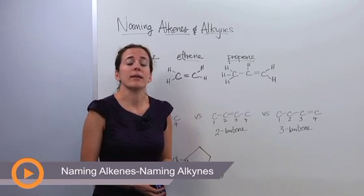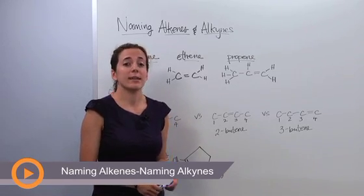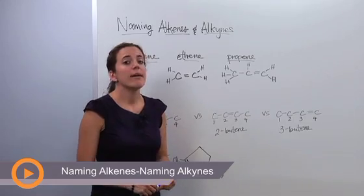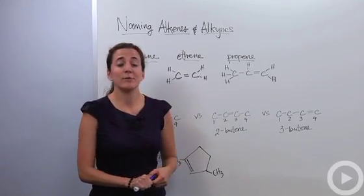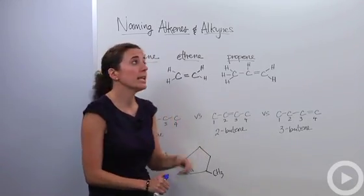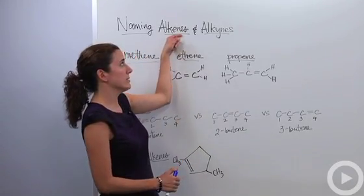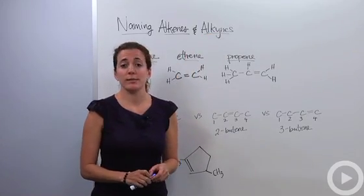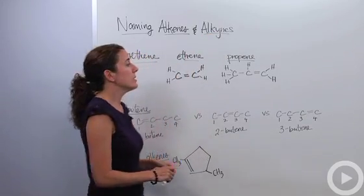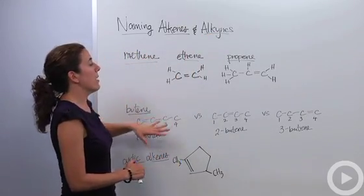We're going to talk about naming alkenes and alkynes. Alkenes and alkynes are types of hydrocarbons. Alkenes contain double bonds and alkynes contain triple bonds. So let's talk about naming them.